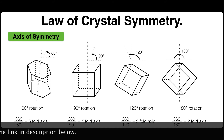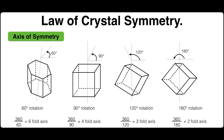Further examples: when a hexagonal structure is rotated through 60 degrees it shows the same appearance, therefore 360 divided by 60 gives a 6-fold axis of symmetry. Similarly, when a cubic structure is rotated through 90 degrees it shows the same structure again, so 360 divided by 90 gives a 4-fold axis. Other axes of cubic structures showing 120-degree and 180-degree rotations are 3-fold and 2-fold axes of symmetry respectively.